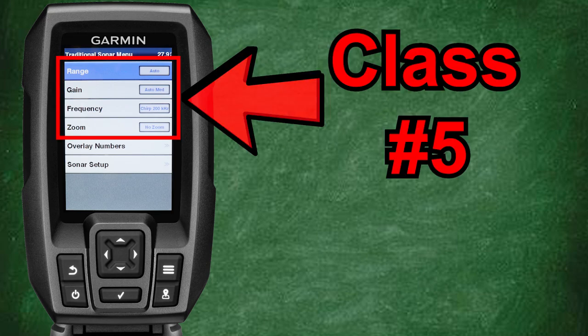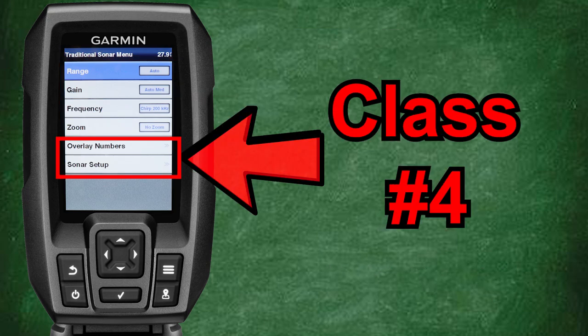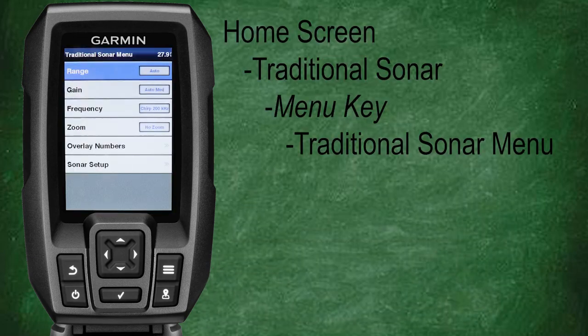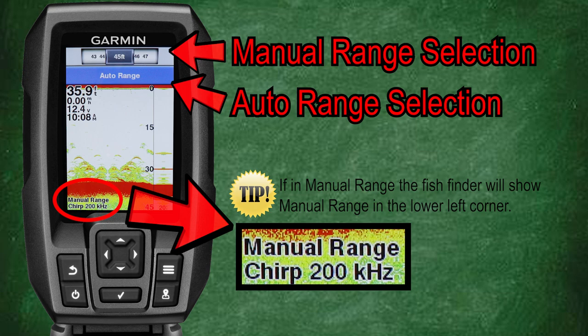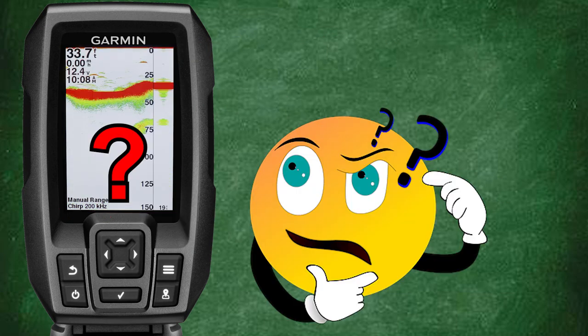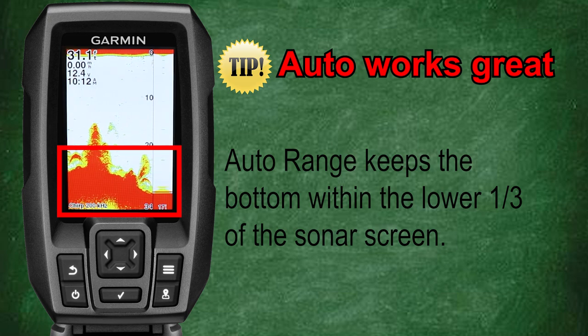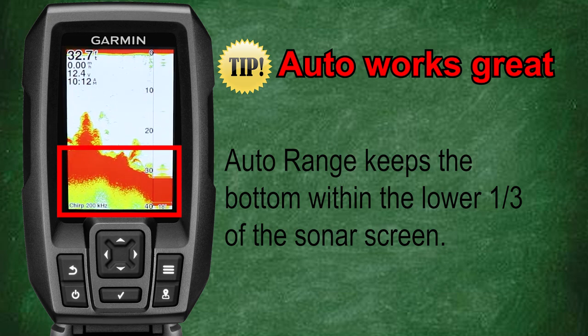For this class we'll be covering range, gain, frequency, and zoom, as we looked at sonar setup and overlay numbers in class number four. The first feature is range. From the traditional sonar menu, scroll down and select range. Here you can adjust the range of the depth scale that appears on the right side of your screen. You can set your depth range manually or allow the fish finder to automatically adjust the range by selecting auto range. I rarely ever adjust my depth range manually because it's just too much work to consistently adjust as the bottom contours change, and without proper adjustment it can lead to issues with your sonar image. The Garmin Striker does a pretty good job of adjusting the depth range when in auto, keeping the bottom within the lower third of the sonar screen, which means you can spend more time fishing and less time messing with your fish finder.